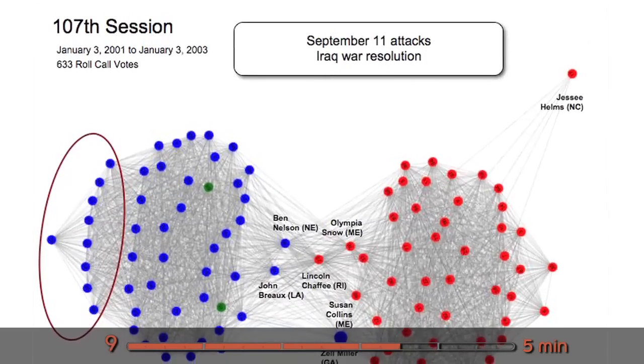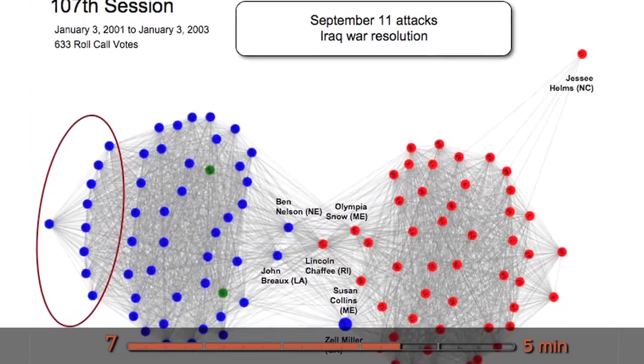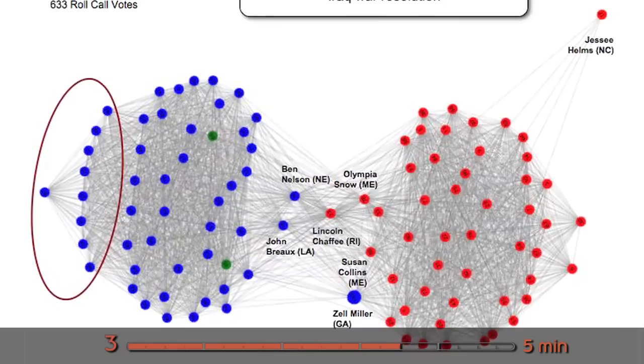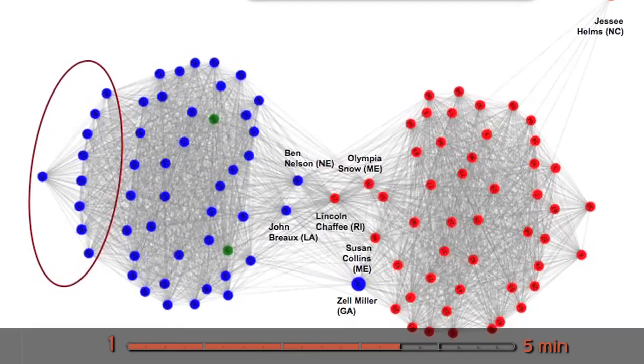This is the graph during the period of September 11th. So you can see again it looks almost like 1991, a good bit of unity across parties. A lot of indications that things came together.